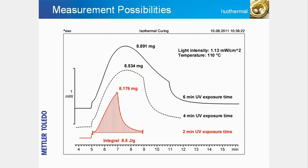The example shows that a great deal of information can be obtained from just one sample using a simple heating-cooling-heating cycle. In an isothermal experiment, changes in the sample are measured over a certain period of time during which the temperature is kept constant. This measurement mode is used to obtain information about the time that elapses before an effect occurs or about the duration of an effect. For example, in the determination of the oxidation induction time, the parameter of interest is the time that elapses before the sample starts to oxidize at a particular temperature.